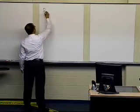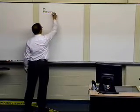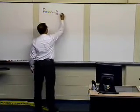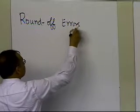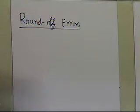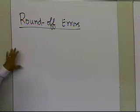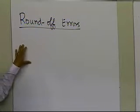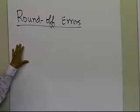In this segment, we're going to talk about round-off errors. There are several possibilities of error whenever you use numerical methods, but we want to concentrate on just two errors: one is the round-off error and another is the truncation error.